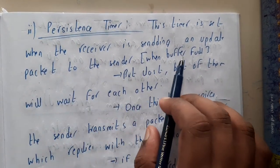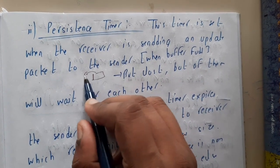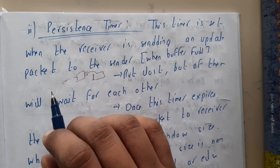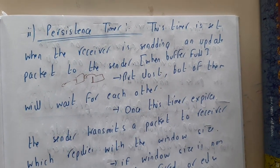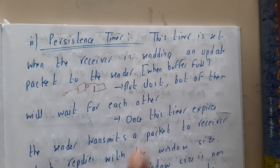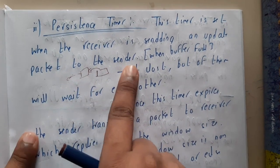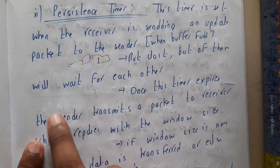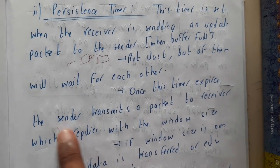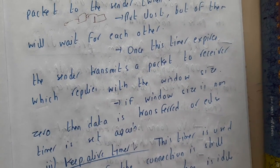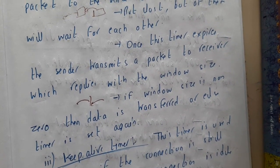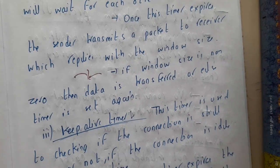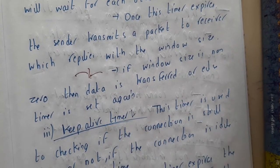The persistent timer is set when the receiver sends an update packet to the sender indicating the buffer is full. As discussed in a previous lecture, when the buffer is full the receiver asks the sender to stop sending data, and later notifies when space is free. If that notification is lost, both sides keep waiting. The persistent timer handles this — once it expires, the sender transmits a probe packet asking for the current window size, and transfers only if the window size is greater than zero.